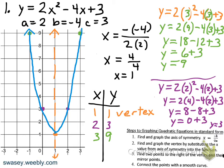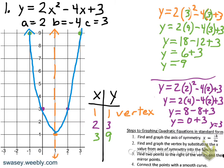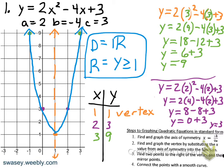This shape is called a parabola — a u-shape that sometimes opens up and sometimes opens down. Notice it's symmetrical; you can reflect the points to the right of the axis of symmetry over to the left. The domain is all real numbers — we can replace x with any real number and get a y value. For the range, notice we have a lowest y value at 1 and all other y values are above that, so the range is y is greater than or equal to 1.